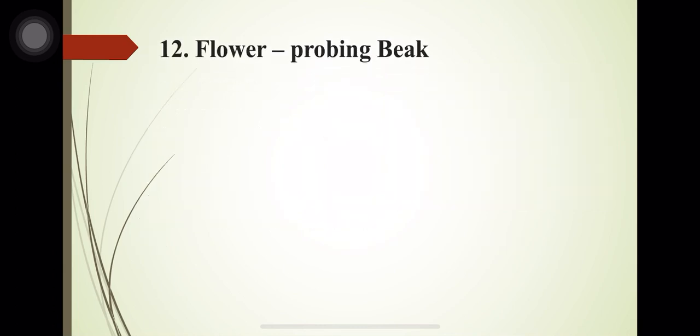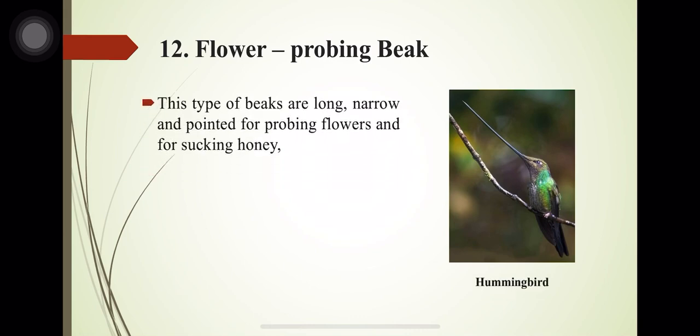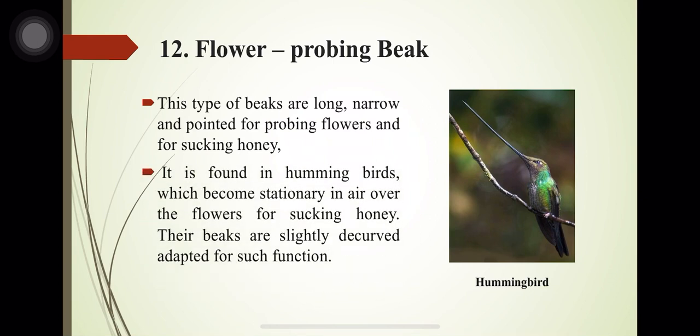The flower-probing beak is found in hummingbirds. These beaks are long, narrow and pointed for probing flowers and sucking honey. Hummingbirds become stationary in air over flowers while sucking honey, and their beaks are slightly decurved and adapted for this function.